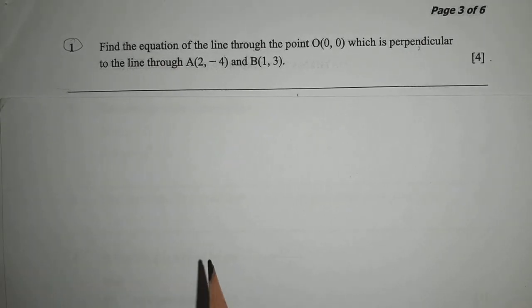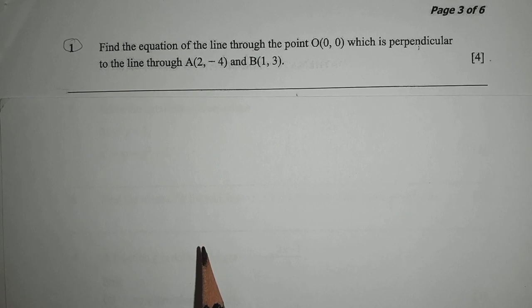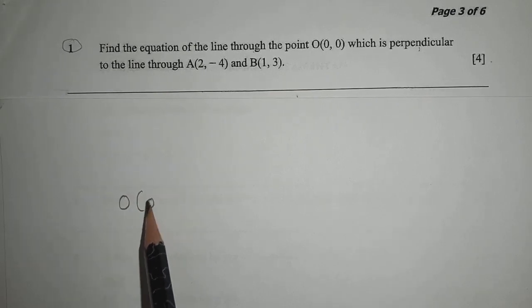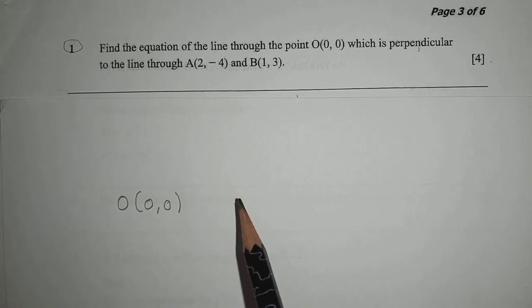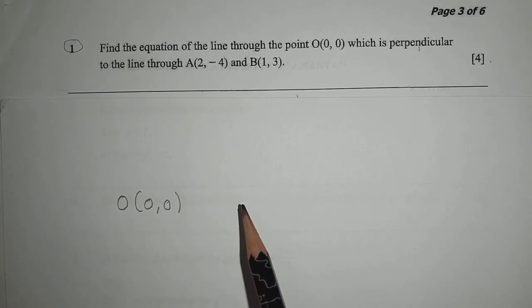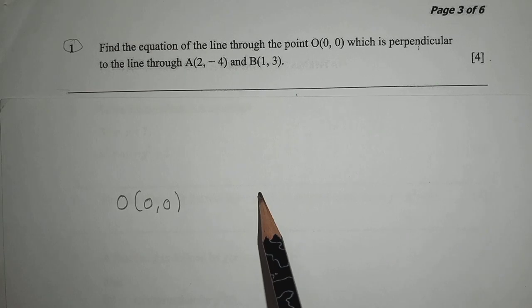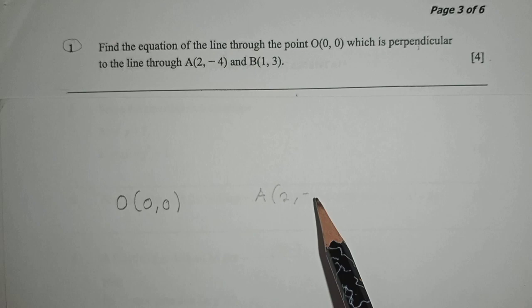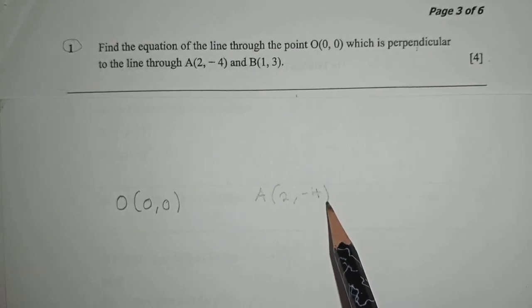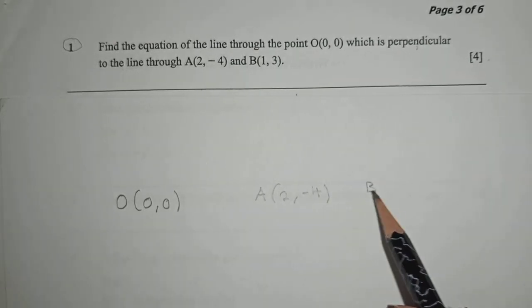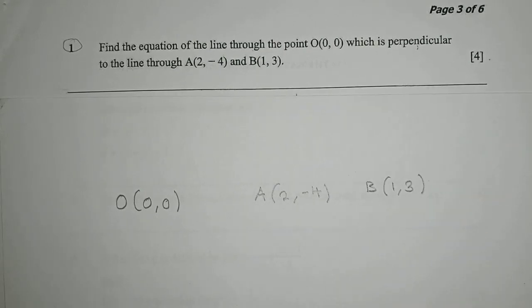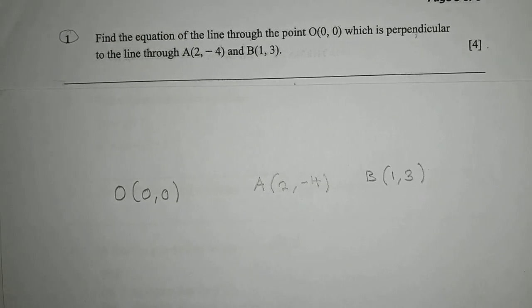Question one reads: Find the equation of the line through point O with coordinates (0, 0) which is perpendicular to the line through point A at (2, -4) and point B at (1, 3).